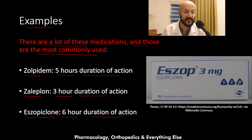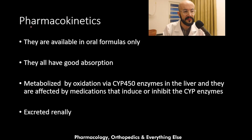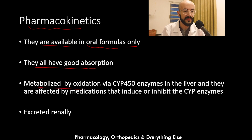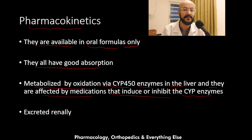Here is a picture of Eszopiclone. Now let's talk about the pharmacokinetics of the Z-drugs. All of them are available in oral formulations only, and they all have good absorption. They are metabolized by oxidation via the CYP-450 enzymes in the liver, and they are affected by medications that induce or inhibit the CYP enzymes. They are excreted renally.